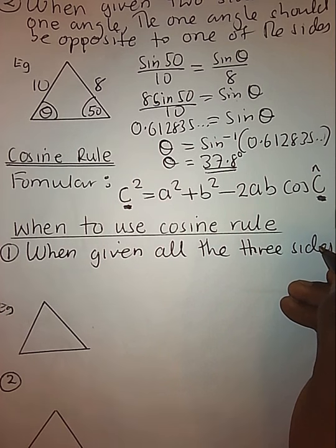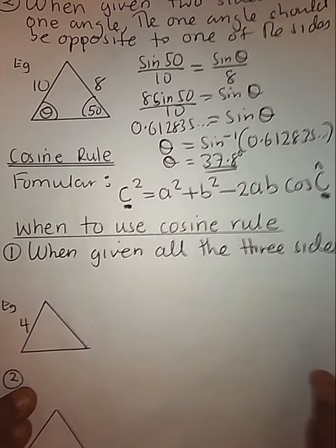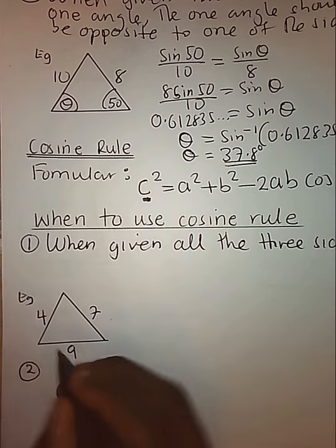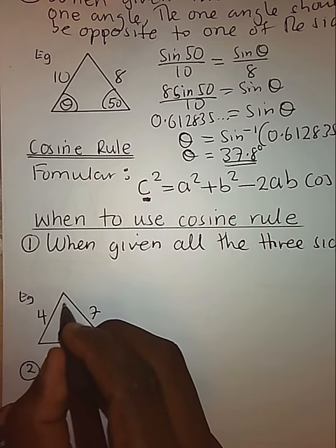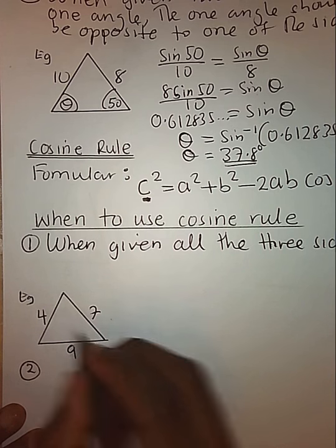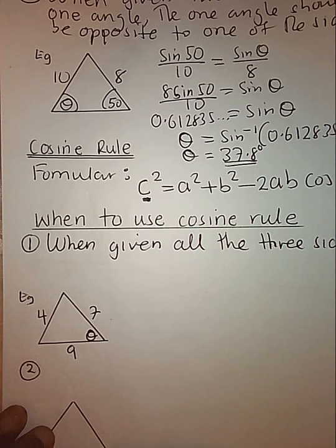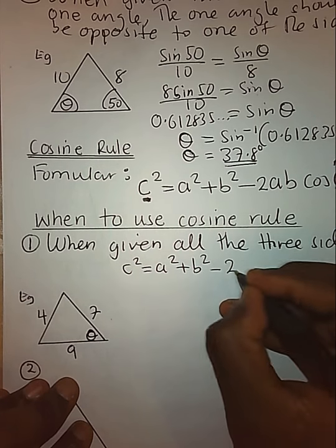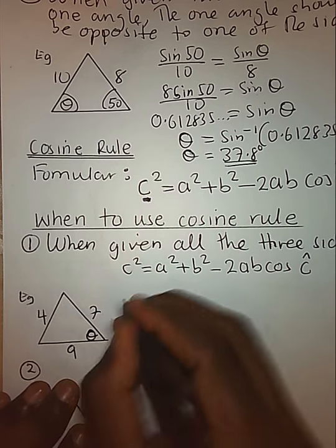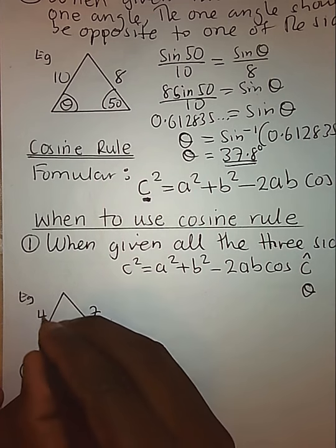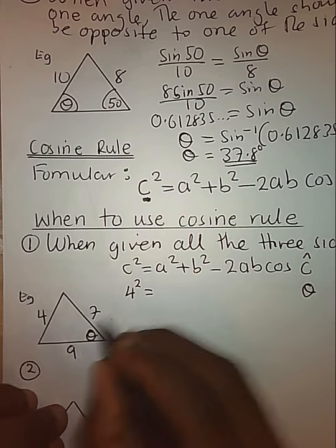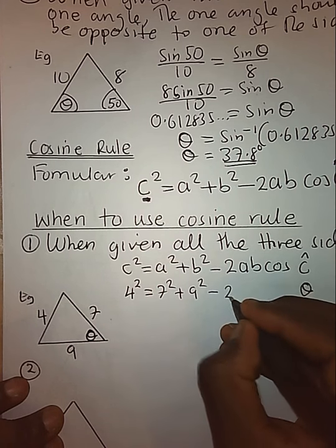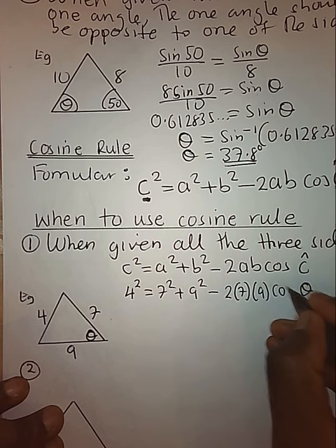We can use the cosine rule when given all three sides to find an angle. Take a situation where you are given sides 4, 7, and 9. The angle theta is placed opposite to the side 4, so in the formula C squared equals A squared plus B squared minus 2AB cos C, side 4 takes the position of C, the angle takes position of angle C, and 7 and 9 take the positions of A and B. So: 4 squared equals 7 squared plus 9 squared minus 2 times 7 times 9 times cos theta.